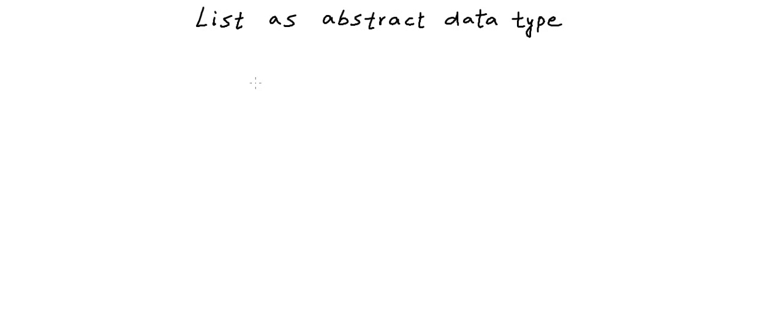In this lesson we will study one simple data structure. We will first define an abstract view of it as an abstract data type, and then we will see the possible implementations. This data structure is list. List is a common real-world entity — it is nothing but a collection of objects of the same type. We can have a list of words, a list of names, or a list of numbers.